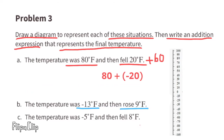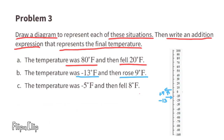Part b: the temperature was negative 13 degrees Fahrenheit and then rose 9 degrees Fahrenheit. 'Rose' means it increased 9 degrees Fahrenheit, so we use plus 9 in this expression: negative 13 plus 9.